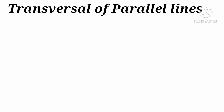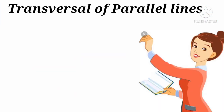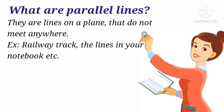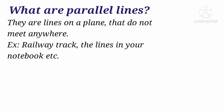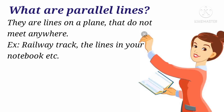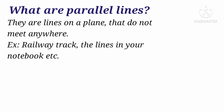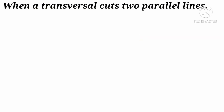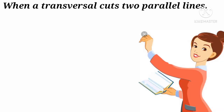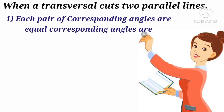Transversal of parallel lines. What are parallel lines? They are lines on a plane that do not meet anywhere. For example, railway track, the lines in your notebook, etc. Let us see what happens when a transversal cuts two parallel lines.